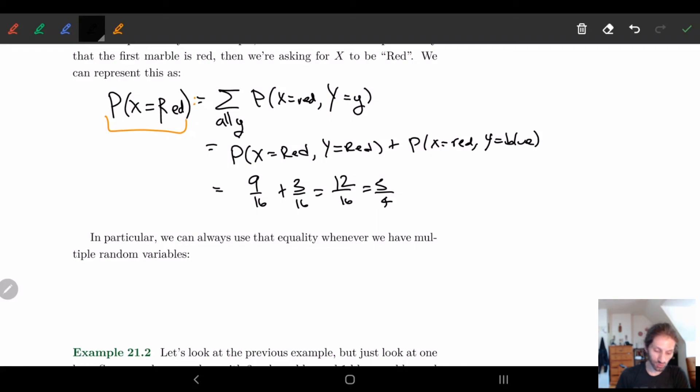And we can always use, and in fact this little thing we did here is always true. So we can always do this. We can say P of x is equal to x for a joint distribution, this we can rewrite as the sum over all y of P of x is equal to x and y is equal to y. And we can define it this way. So when we have joint distributions, we can kind of do it in this way.